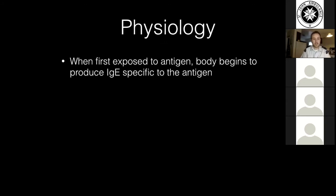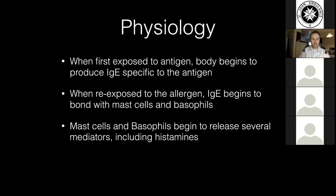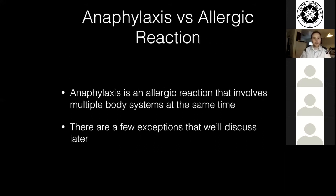The first time you're exposed to the antigen, you create IgE specific to it. When you're re-exposed, it becomes an allergen — your body already knows how to create that IgE, sees the allergen again, panics, and releases lots of IgE throughout the body. The IgE attaches to mast cells and basophils, which begin to release several mediators in response to this perceived attack. The most important one to us is the histamine response — histamines travel throughout the body causing a variety of symptoms.